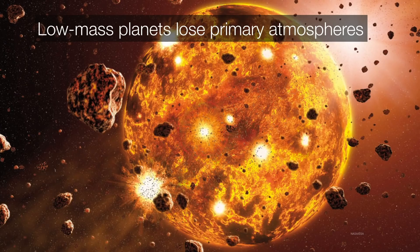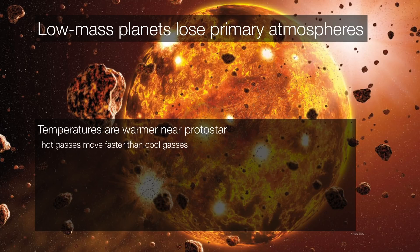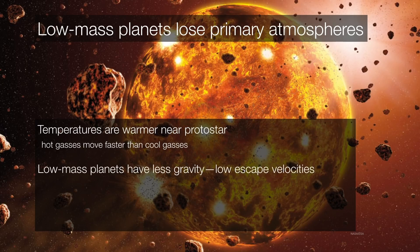However, in the inner solar system where we have lower mass proto-planets, it's a much different situation. They are unable to hold on to those primary atmospheres. The temperatures are much warmer near the proto-sun. Hot gases are going to always move faster than cold gases. So if you have a low-mass planet with low-mass gases, they can easily achieve escape velocity.